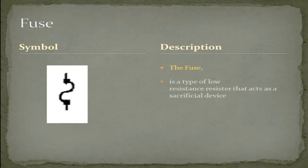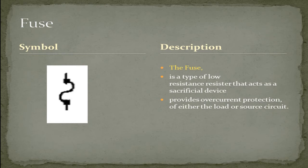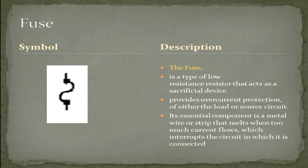The fuse is a type of low resistance resistor that acts as a sacrificial device. It provides over-current protection of either the load or source circuit. Its essential component is a metal wire or strip that melts when too much current flows, which interrupts the circuit in which it is connected.